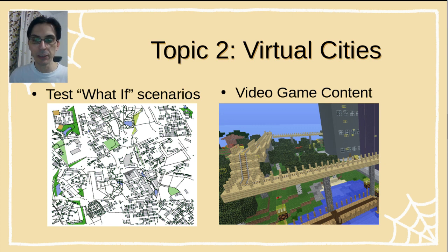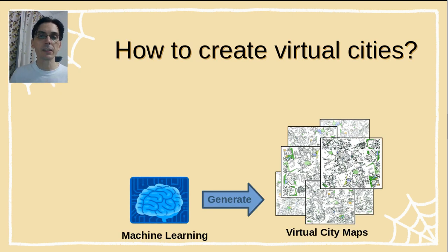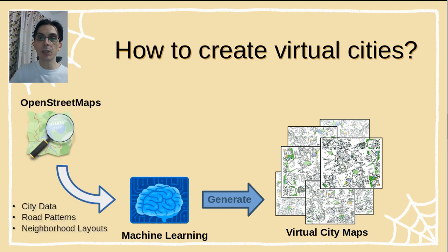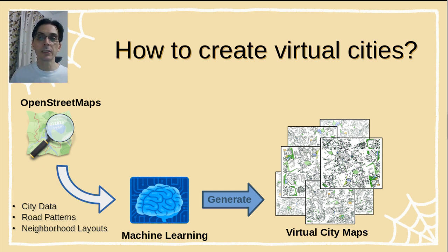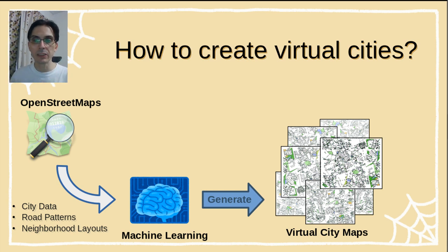Virtual cities are also useful for entertainment, such as creating content for computer graphics and video games. To create these virtual cities, we use ideas from machine learning. We take data from thousands of cities in OpenStreetMaps and the machine learning system detects patterns in the structure of cities, such as neighborhoods, road layouts, etc. Then the system recombines these patterns to create new cities that are similar to existing ones. The multi-agent city system serves as a check: we observe how agents behave in real cities and in virtual cities, and if the behavior is too different, there is probably something wrong with the virtual cities that needs to be fixed.